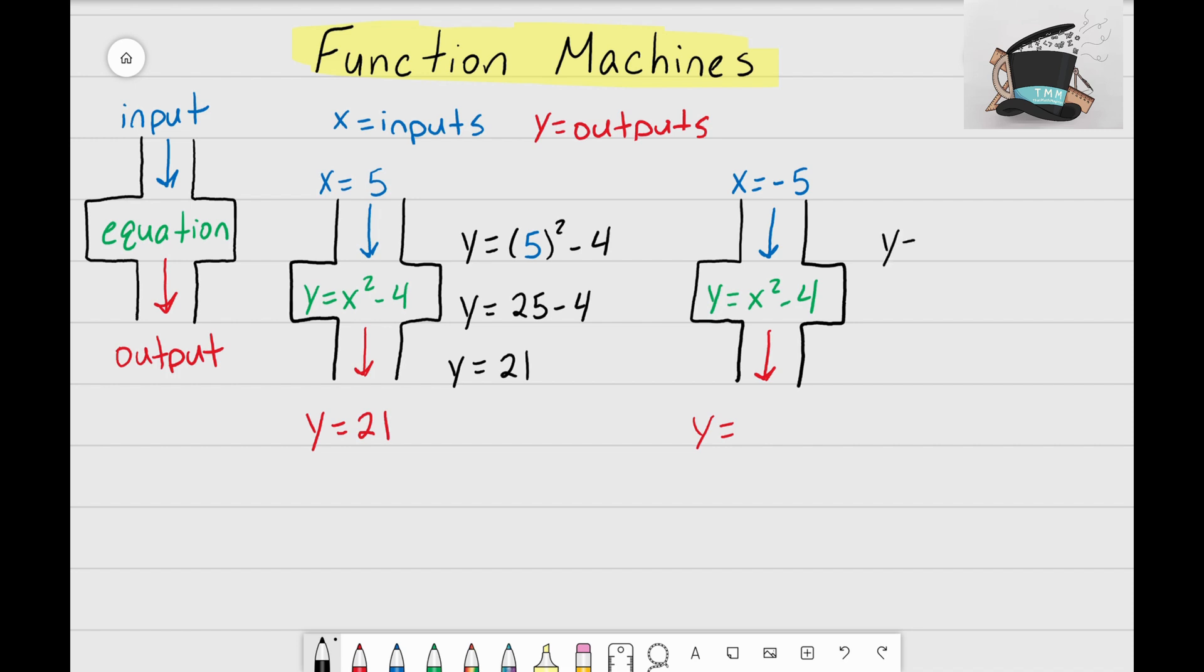Rewriting my equation: y equals x squared minus 4. And again, instead of writing x, I'm going to write negative 5. Now I just need to solve this equation. y equals negative 5 squared, is the same thing as negative 5 times negative 5, which turns into positive 25. I bring down the negative 4,